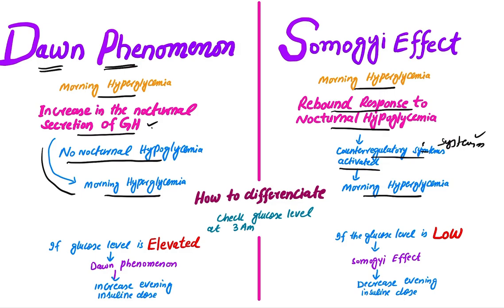How to differentiate between these two? Check glucose level at 3 a.m. If the glucose level is elevated at 3 a.m., then it is Dawn Phenomenon, and we will increase the evening insulin dose. If the glucose level is low at 3 a.m., then it is Somogyi Effect, and we will decrease the evening insulin dose.